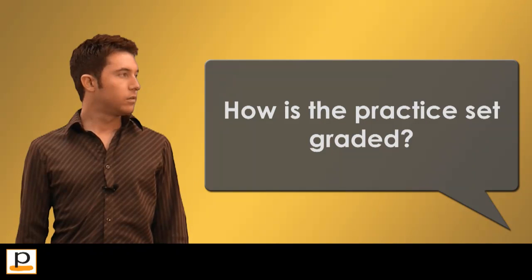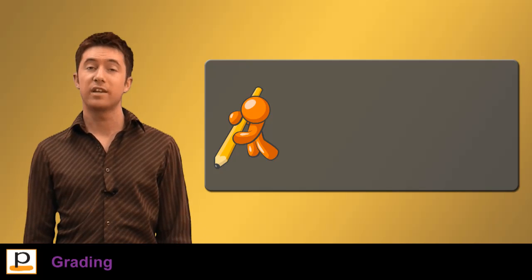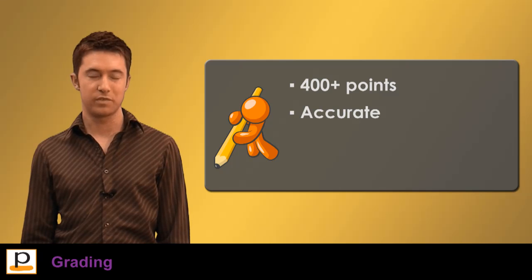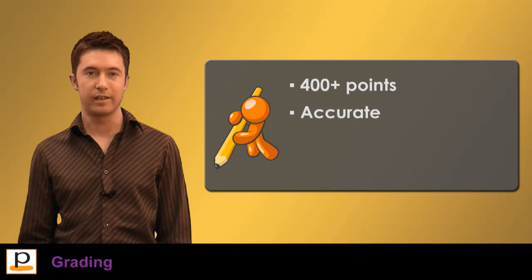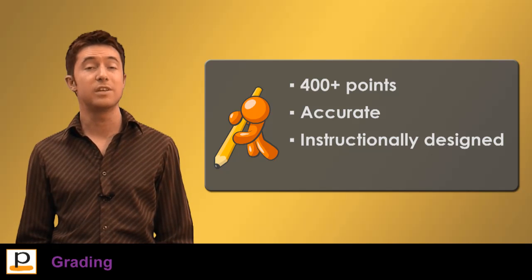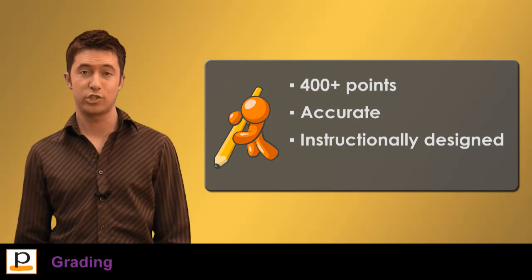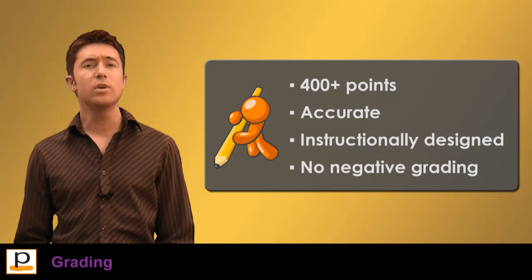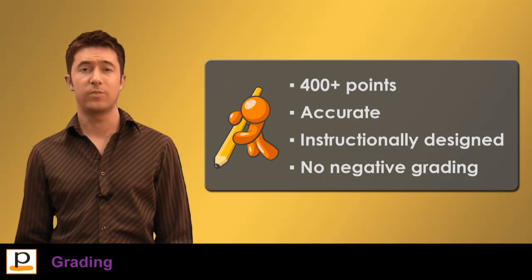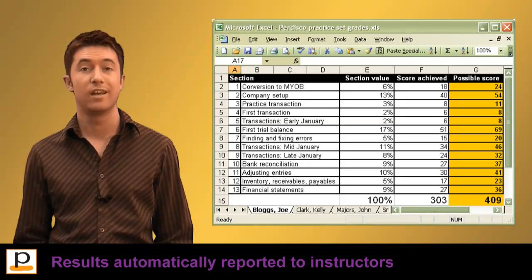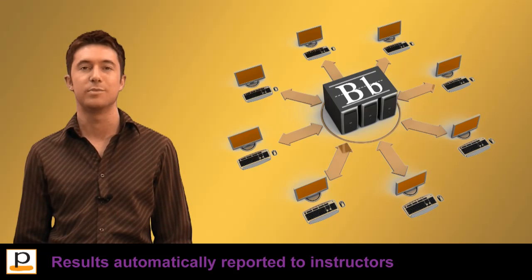Our MYOB virtual tutor practice set is graded out of over 400 points, providing a much more accurate picture of a student's performance than is possible with manual grading. The points are weighted by our instructional designers to reflect each item's level of difficulty and the frequency with which students have already completed similar items. Since we do not use negative grading, points are awarded for correct answers but are not deducted for incorrect answers. Detailed student results are delivered to instructors as an Excel spreadsheet that can also be integrated with your university's course management system.